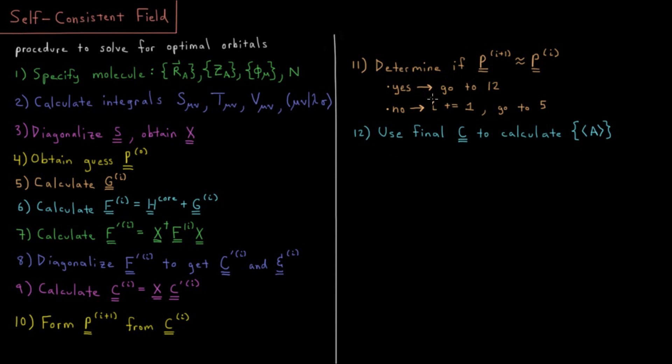So the name self-consistent field is basically saying that the density matrix, the field, or the density of all of the electrons in the molecule, is sufficiently similar between iterations, i.e. self-consistent, that we are now iterated to the point where all of the orbitals are actually eigenfunctions, or eigenvectors in this case, of our Fock matrix. So once we have iterated to self-consistency, our orbitals are going to be eigenvectors of the Fock matrix. And then the epsilon matrix is going to represent what those orbital energies are.